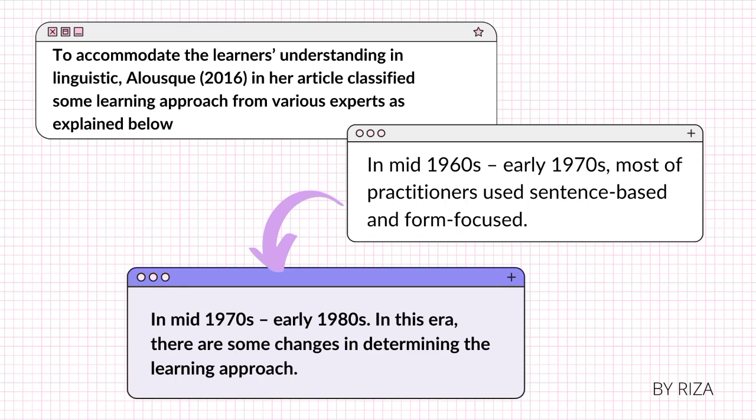To accommodate the learners' understanding in linguistics, Owosku (2016) in her article classified some learning approaches from various experts. In the mid-1960s until early 1970s, most practitioners used sentence-based and form-focused approaches; therefore, the ESP course concentrated on vocabulary and grammar. In the mid-1970s until early 1980s, there were changes in determining the learning approach. The first stage used a functional approach focused on a communicative view of language teaching and learning. The second stage used a linguistic approach such as rhetorical analysis. The third stage was connected with ESP course design, such as needs analysis.